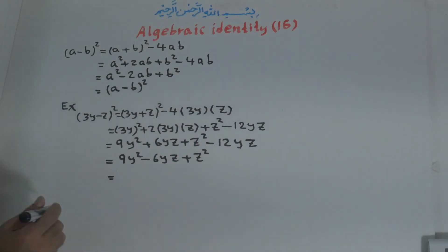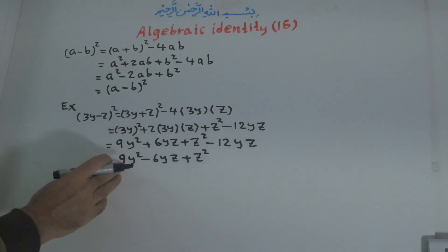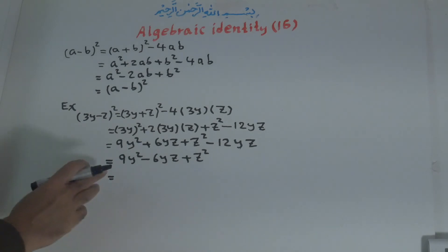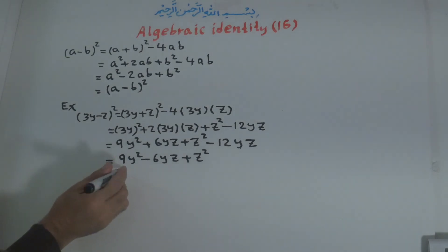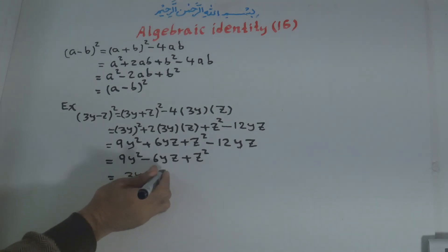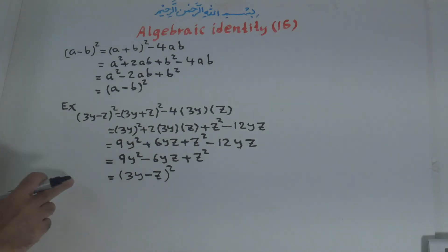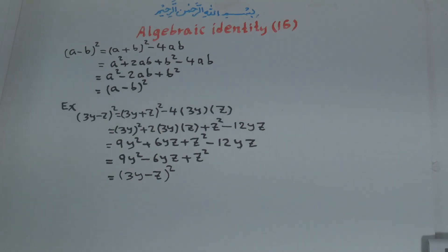According to Identity number 2, this is a complete square. Since 9y² is (3y)², and the middle term 6yz equals 2 times 3y times z, the expression 9y² - 6yz + z² equals (3y - z)². So the left side equals the right side, and we have proven that (a - b)² = (a + b)² - 4ab. This was the information about Identity number 16.